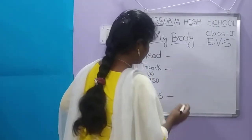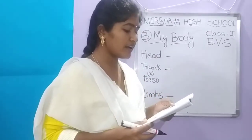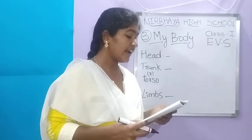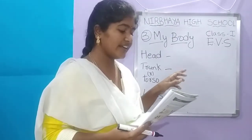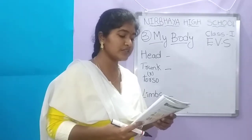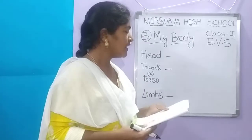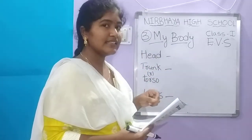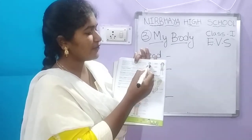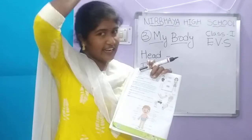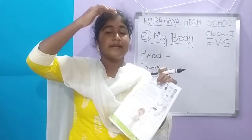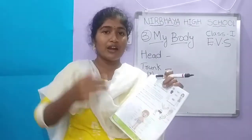The head is the uppermost part of the body — T-H-E H-E-A-D is the U-P-P-E-R-M-O-S-T P-A-R-T of the B-O-D-Y. Here you see the boy and girl pictures. What is the uppermost part of the body? The head is the uppermost part of the body. We see the head at the top.